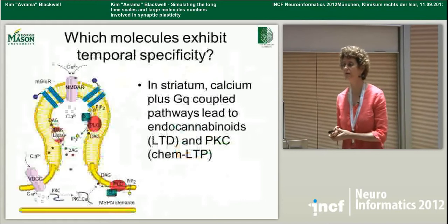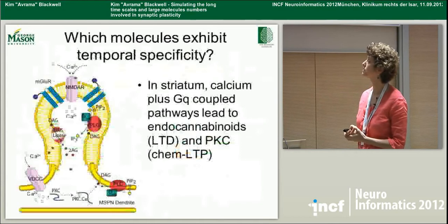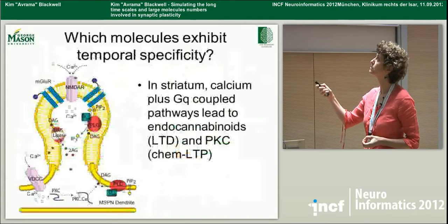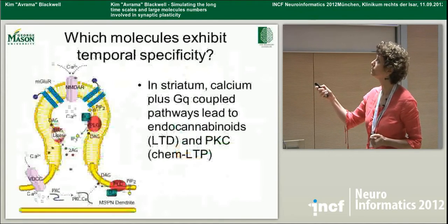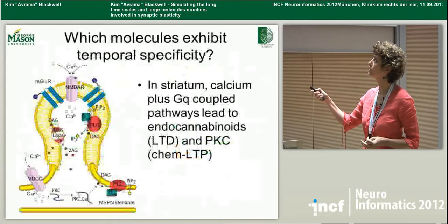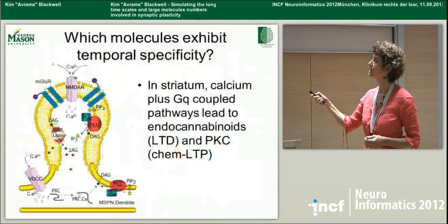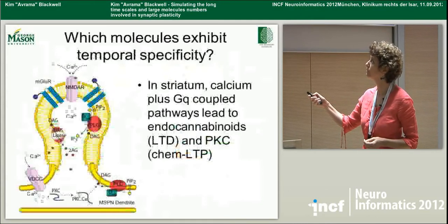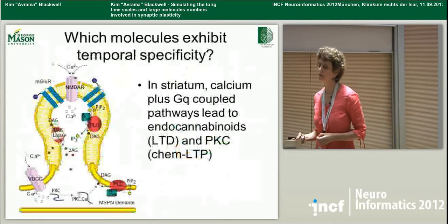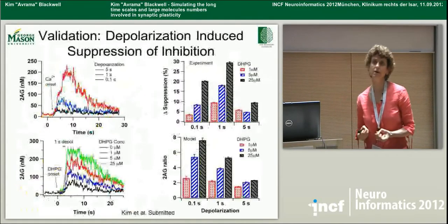We can now use this stimulation paradigm to determine which molecules exhibit this temporal specificity. For this case, we used a subset of reactions — the GQ-coupled pathways. In our model, we have calcium influx as through NMDA receptors, metabotropic glutamate receptors type one (group one), and that's coupled to the GQ protein, which binds to phospholipase C. Phospholipase C is activated by both G-alpha-Q and calcium, and produces diacylglycerol and IP3. Diacylglycerol can bind to DAG lipase, which produces the endocannabinoid 2-AG — required for long-term depression, as many experiments have shown. But diacylglycerol can also bind to protein kinase C, which is transiently activated by calcium, and this has been shown to be important for a chemical type of LTP.